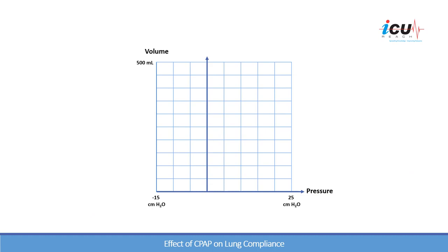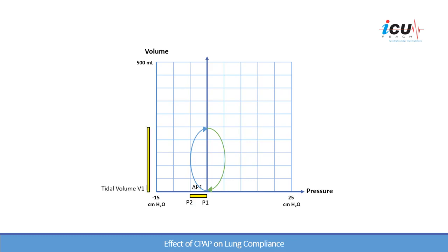We'll take a patient who is on CPAP of 0. When this patient starts inhaling, the intrathoracic pressure will go down from 0 to minus 5. This is a pressure of P1 to P2. The decrease in the intrathoracic pressure will result in a gradient between the trachea and the alveoli that generates flow resulting in a tidal volume into the lung.